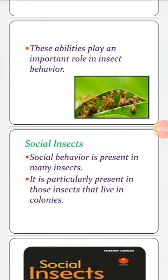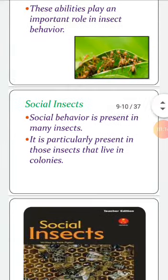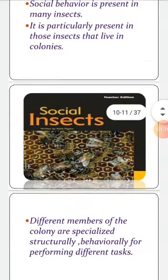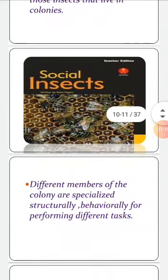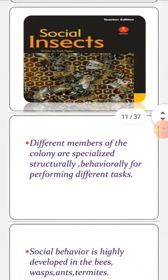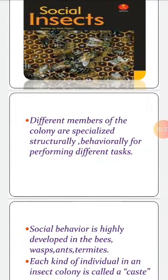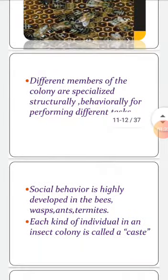Social behaviour is present in many insects. It is particularly present in those insects that live in colonies in the form of a team. Different members of the colony are specialised structurally and behaviourally for performing different tasks. Social behaviour is highly developed in bees, wasps, ants and termites.